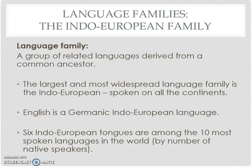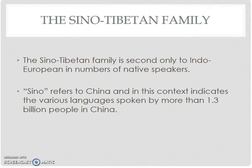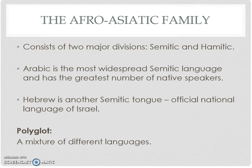Ten of the most spoken languages in the world fall within these families. Here's an example of the language tree. The other major family besides Indo-European is Sino-Tibetan, which is second to Indo-European in number of native speakers. Sino refers to China, with 1.3 billion people.